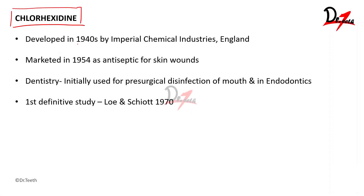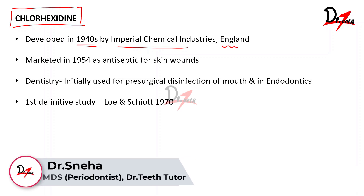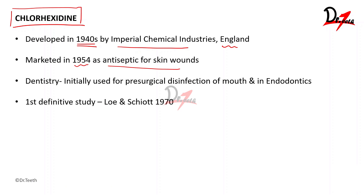Chlorhexidine was developed in the 1940s by the Imperial Chemical Industries in England. Initially it was never marketed as a mouthwash or mouth rinse, so it was never used for dental purposes. It was basically used as an antiseptic for skin wounds. In 1954 and later, in dentistry it was used as a pre-surgical disinfectant of the mouth. The first definitive study on chlorhexidine was done by Lowe and Shiot in the 1970s.